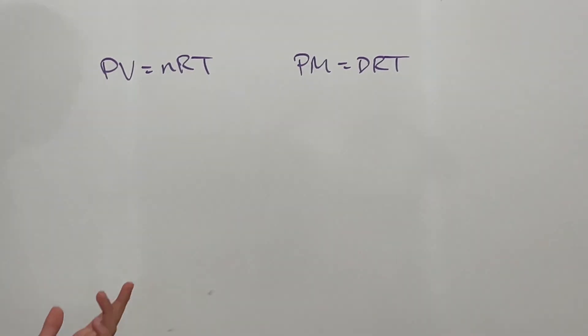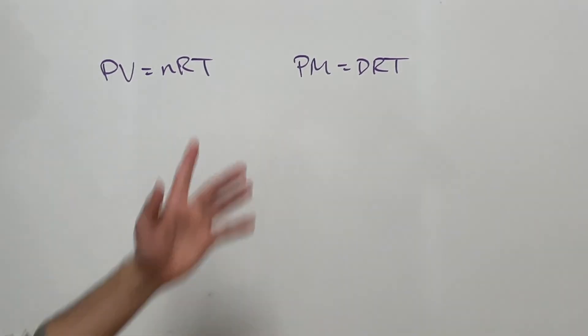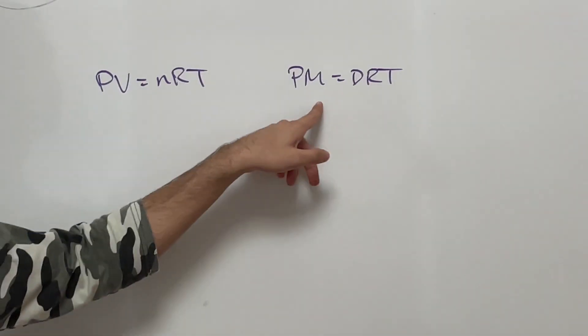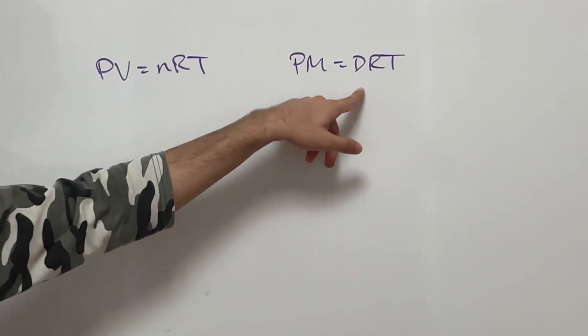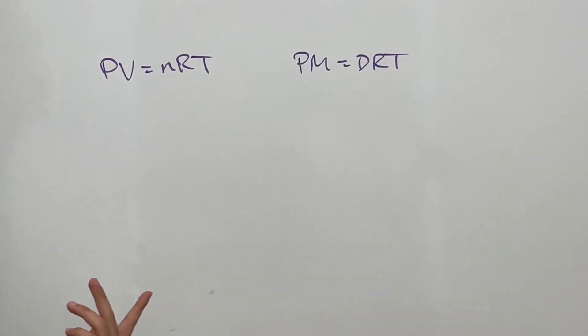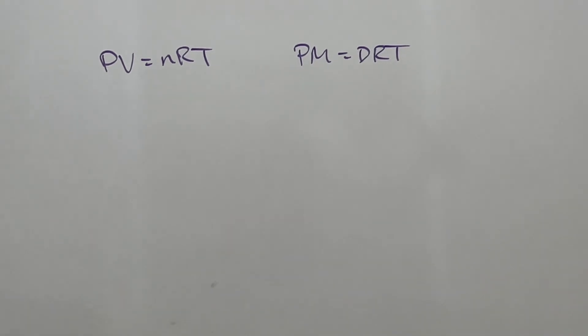So we know what P is - P is pressure, M means molar mass, and D means density. And R is the ideal gas constant, T is just temperature.